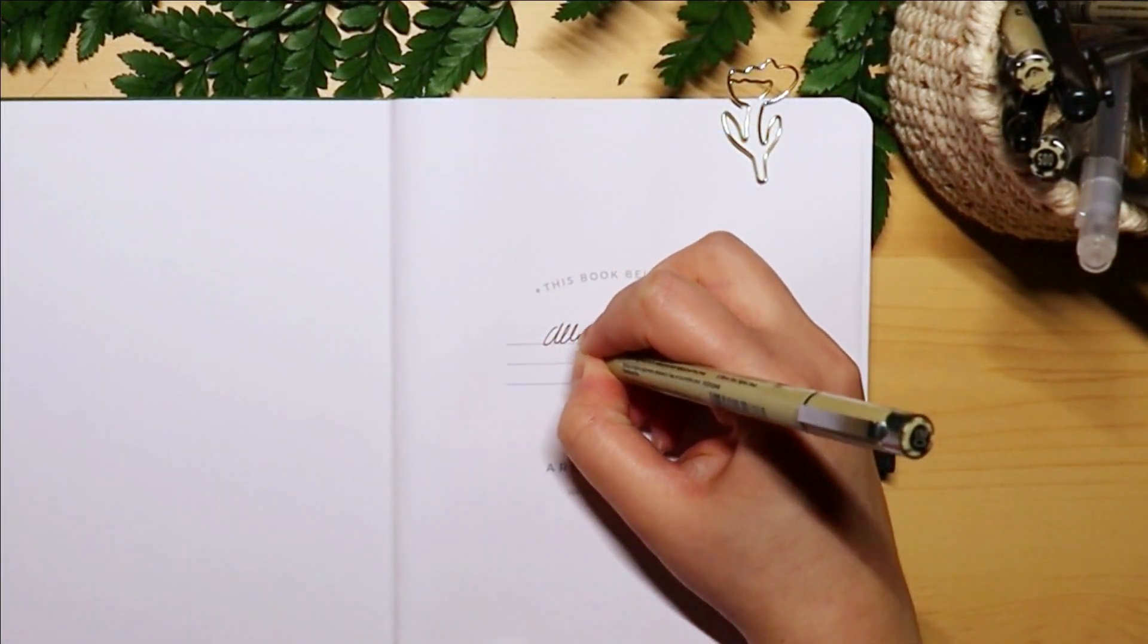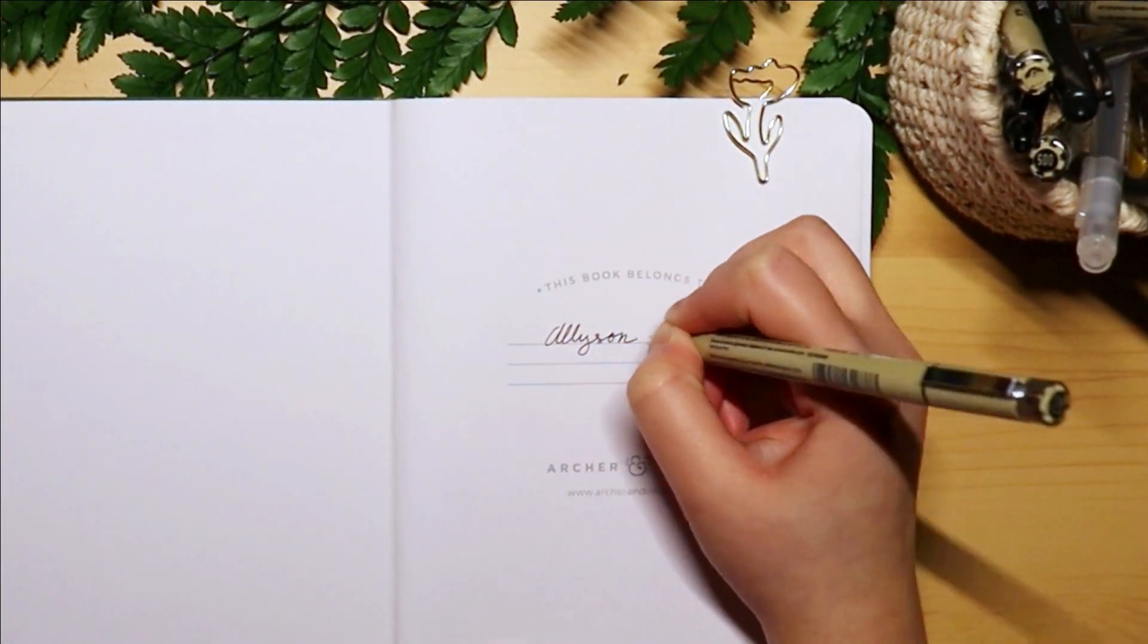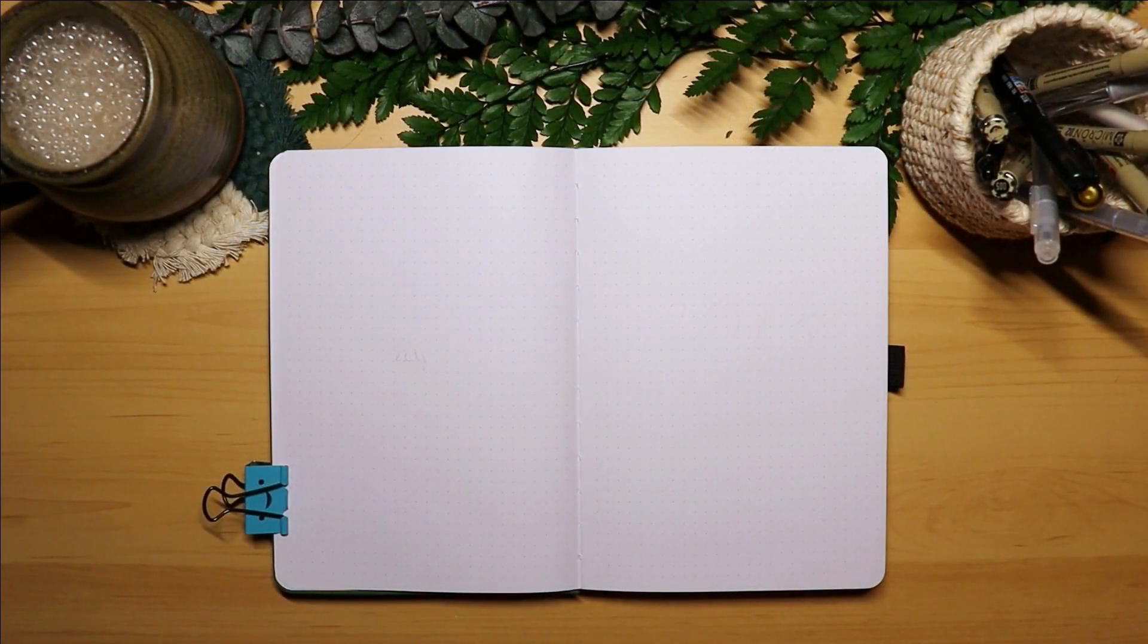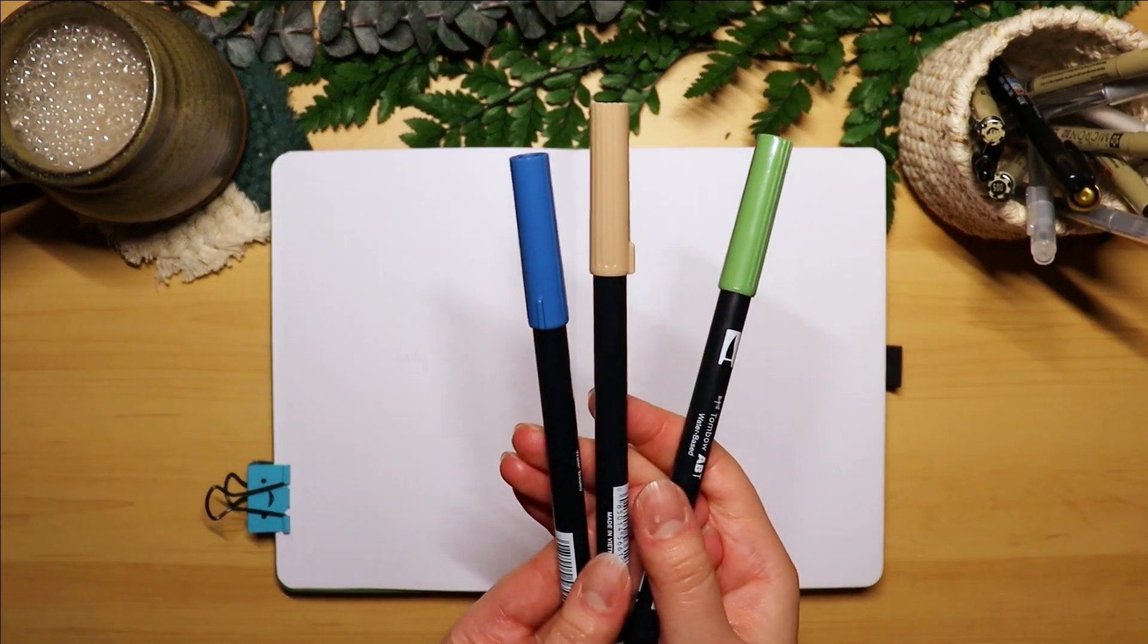I always start by writing my name on the first page. Now I wanted to incorporate the green of the journal into my setup, so the primary three colors I'll be using are green, tan, and blue.